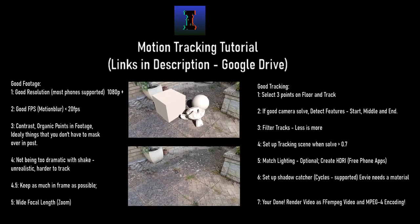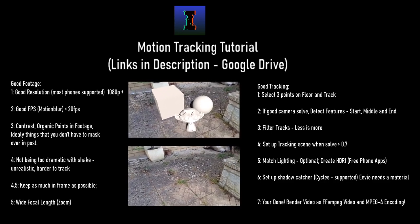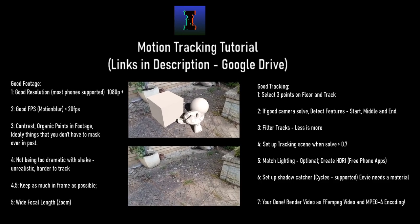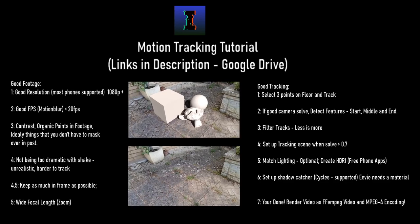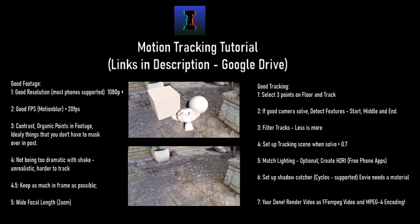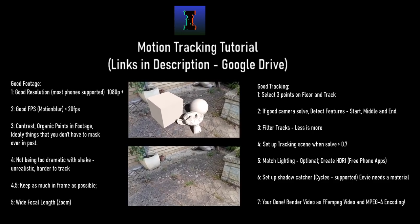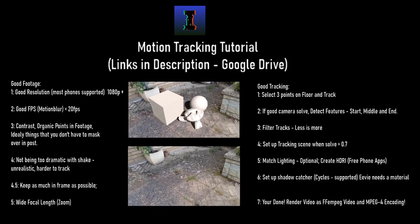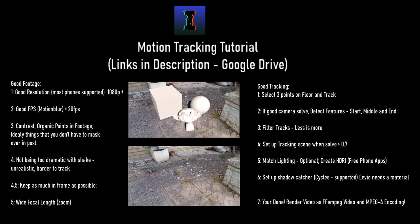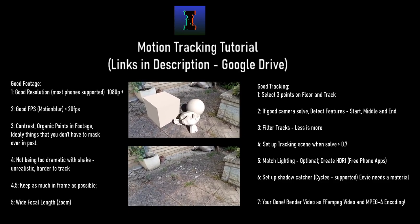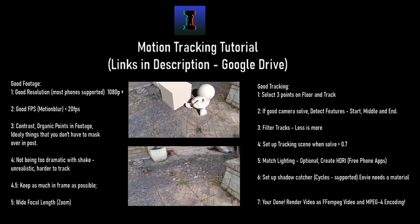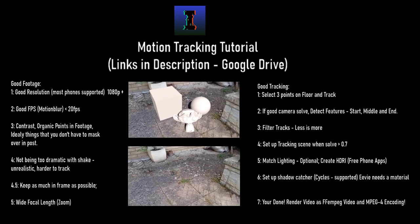Number three is contrast — organic points in footage, ideally things that you don't have to mask over in post. You want to find a good area. We're going to be tracking the floor, so you need to find a floor with lots of different points. By organic I mean things in real life and not things you've put on the ground like masking tape. Usually finding a speckled floor with some weeds or even bubble gum works. You don't want a plain floor because that's going to be impossible to track.